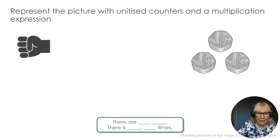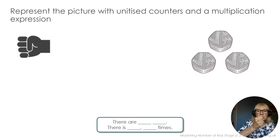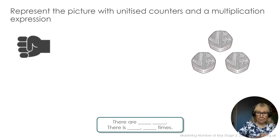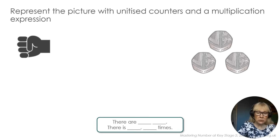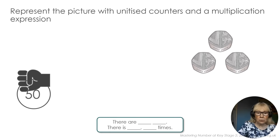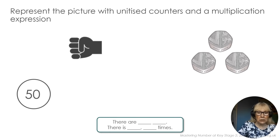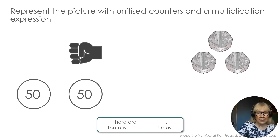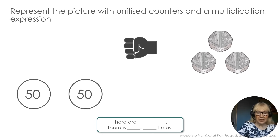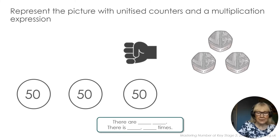Alongside our unitised counters, we're going to be using a stamping gesture that you just saw in the video, where we will stamp out our units. One of the key things about multiplication is that all the units are the same size, and then we will stamp out how many we need. So we need three for these three 50 pence coins. We have one 50 — one unit of 50 — two units of 50, and three units of 50. So that will become common practice in your classrooms. Three times 50.